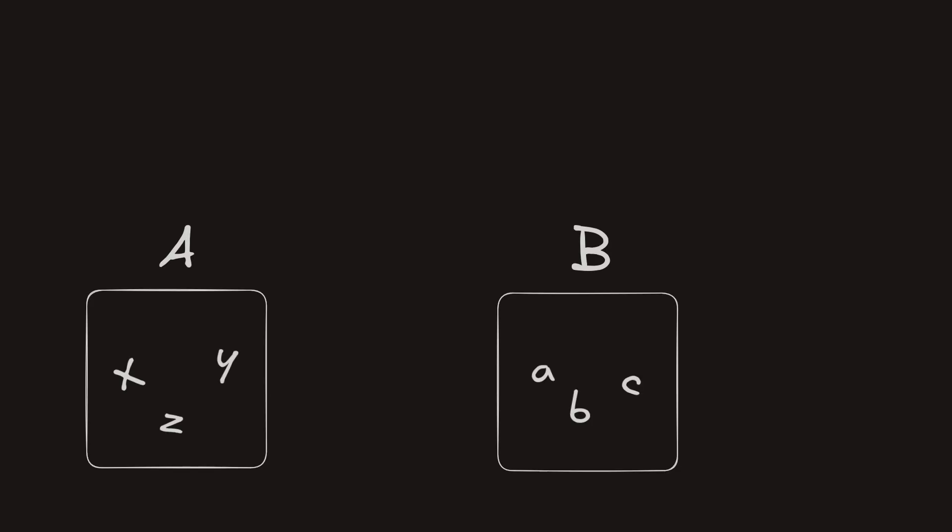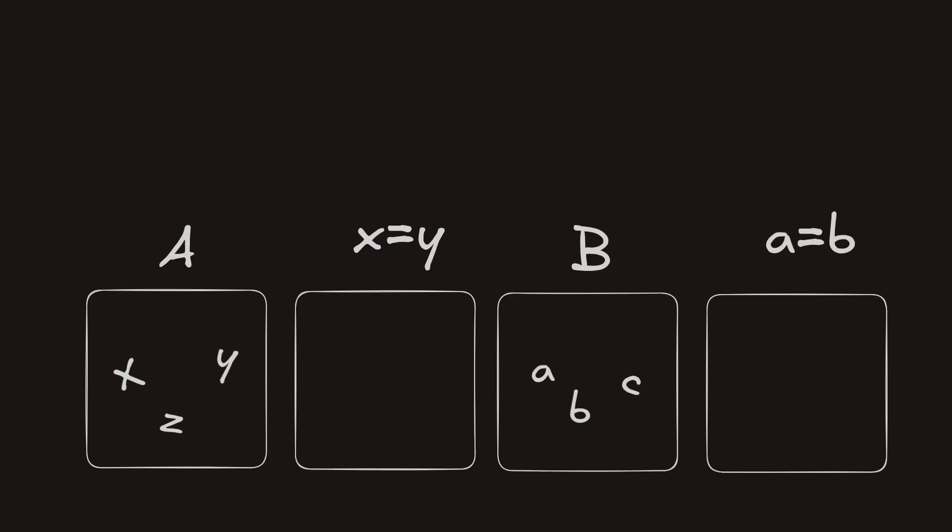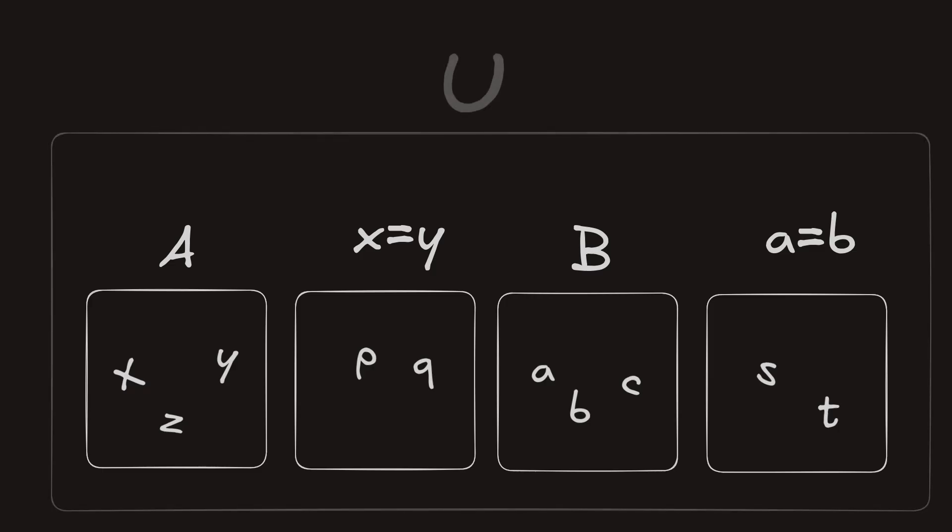So far we have learned about types, terms, equality types, and paths. But there is one special type without which none of this would be possible — something type theorists refer to as a universe.